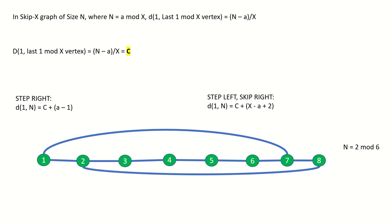This is because once we travel c, or 1 in this case, we need to take one step to get to the 0 mod x vertex and then x minus a, or 6 minus 2, steps to get to the vertex that is a mod x, from which we can then skip right taking one more step to get to the last vertex. That is c steps plus 1 step plus x minus a steps plus 1 step, or c plus x minus a plus 2 steps. In this example that would be 7 steps.